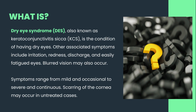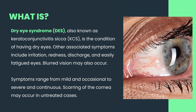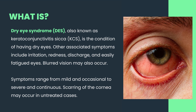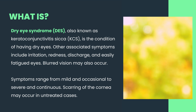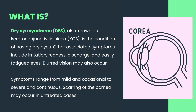What is dry eye syndrome? Dry eye syndrome, DES, also known as keratoconjunctivitis sicca, KCS, is the condition of having dry eyes. Other associated symptoms include irritation, redness, discharge, and easily fatigued eyes. Blurred vision may also occur. Symptoms range from mild and occasional to severe and continuous. Scarring of the cornea may occur in untreated cases.